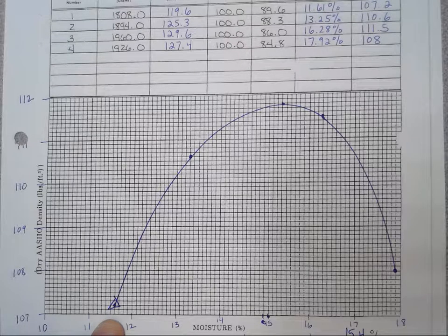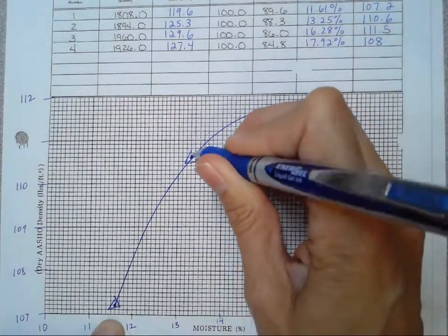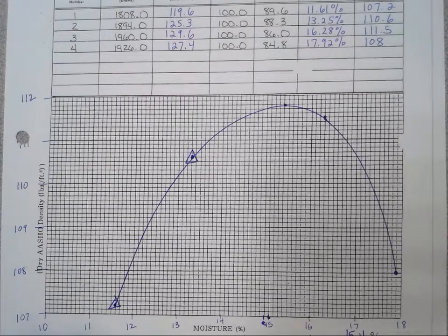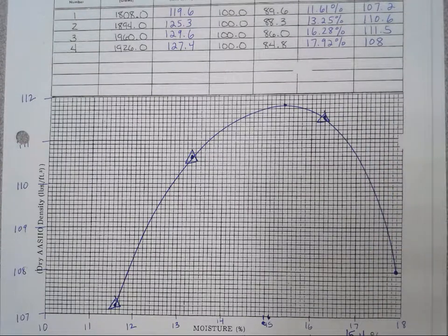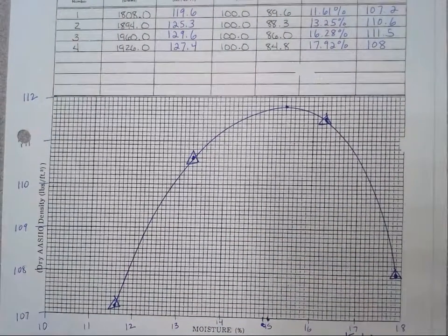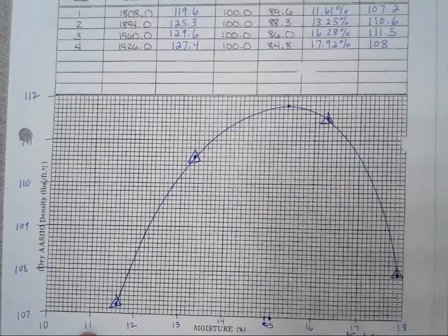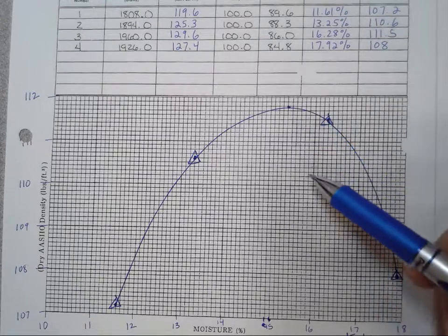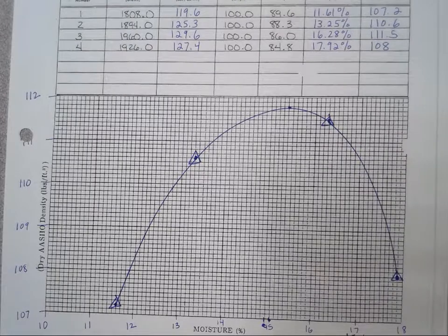And then I put 13.3 and 110.6 comes up here. And then I've got 16.28 and 111.5. So that's right in here. And then 17.92 and 108. So that drops down here. And when I connected those and used my curves, I got that, again, this line's going to go up between that second and third test to a high point here. I called that high point at 15.4% and maximum density of 111.7.